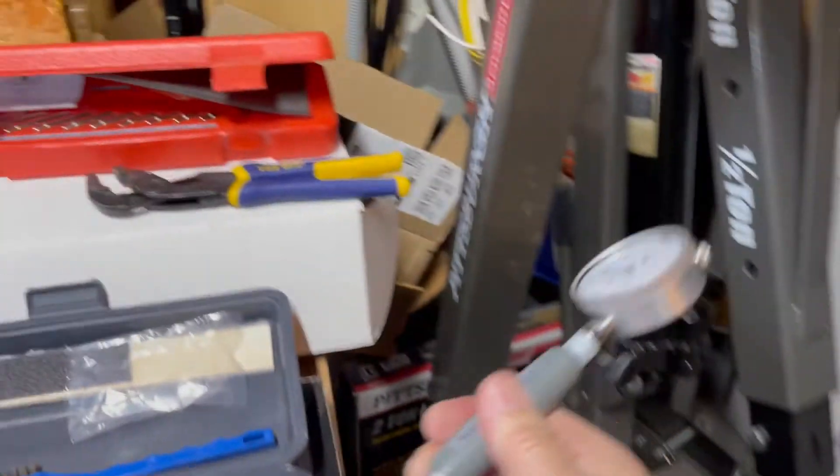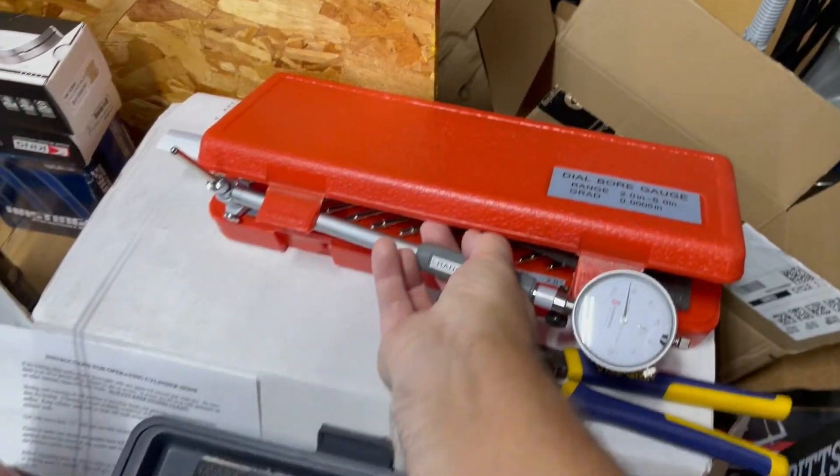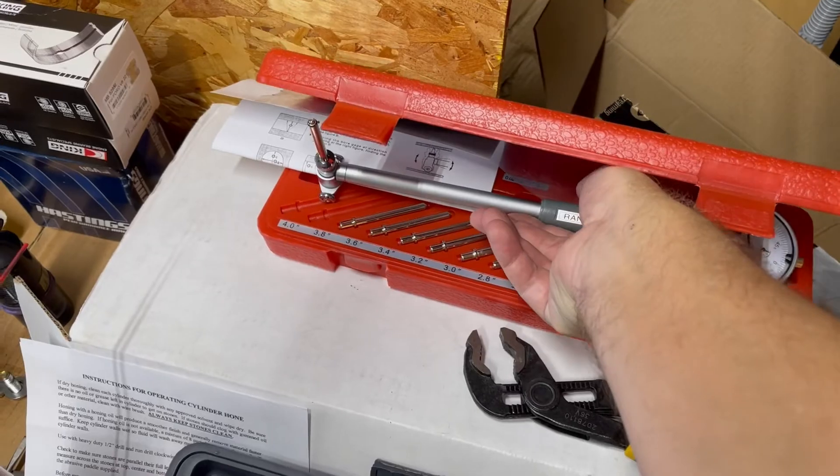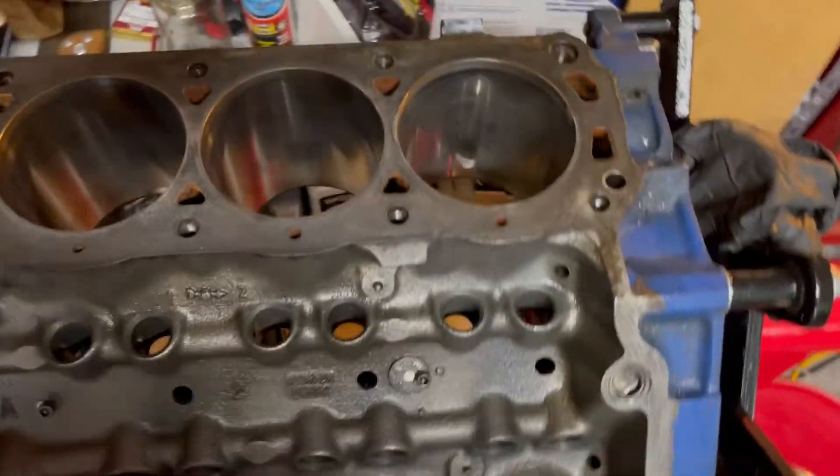I started working on the other side. Let me put my bore gauge down before I bang this thing up. This is only like $50 from Amazon. They're pretty cheap. It's amazing they work. I'm going to grab my lights.